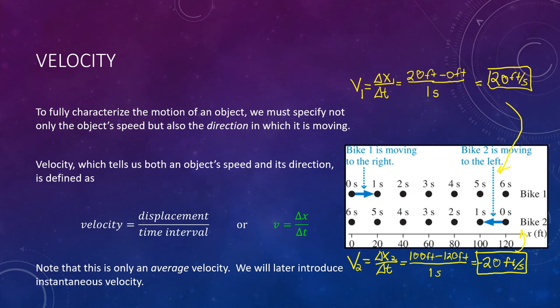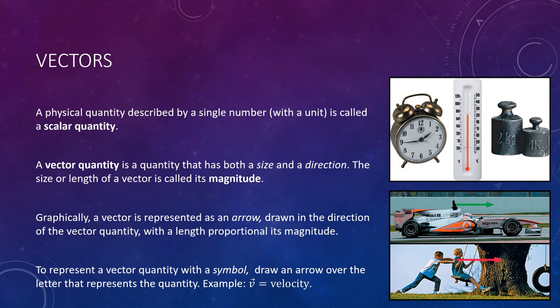This brings us to the last topic of our lecture, vectors. Many physical quantities, such as time, temperature, and mass, can be described completely by simply a number and a unit. For example, the mass of an object might be 6 kilograms, and its temperature might be 30 degrees Celsius. A physical quantity described simply like this by a single number with a unit is called a scalar quantity. A scalar can be positive, negative, or zero. You can have a negative temperature or a positive temperature and so on. But many other quantities have a directional quality that cannot be described simply by a number.